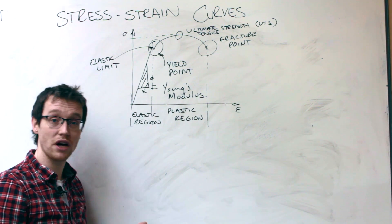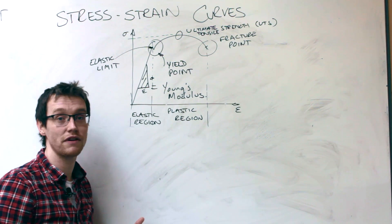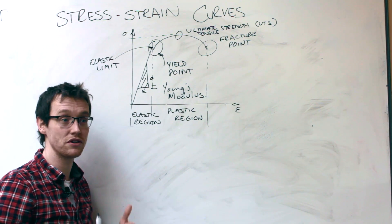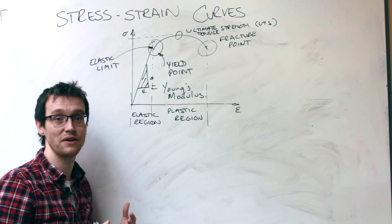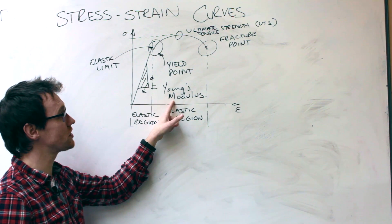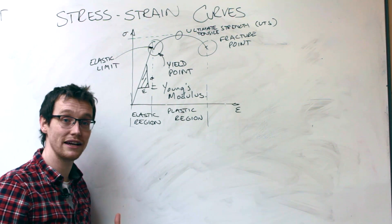So Formula One cars and other high performance racing cars use carbon fibre, not only because it's very light, but it also has a very high Young's Modulus. So it's very rigid. So the car isn't flopping around when it's going into corners. So Young's Modulus is a key term that we're going to investigate now.